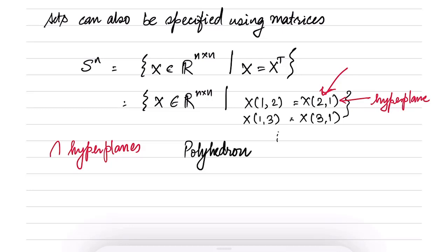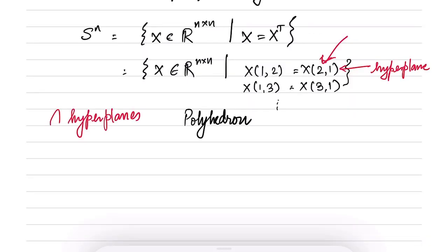So this is just another way of writing the same thing. So earlier, when we were talking in terms of vectors, we said that the equation of hyperplane is A^T x equal to B.